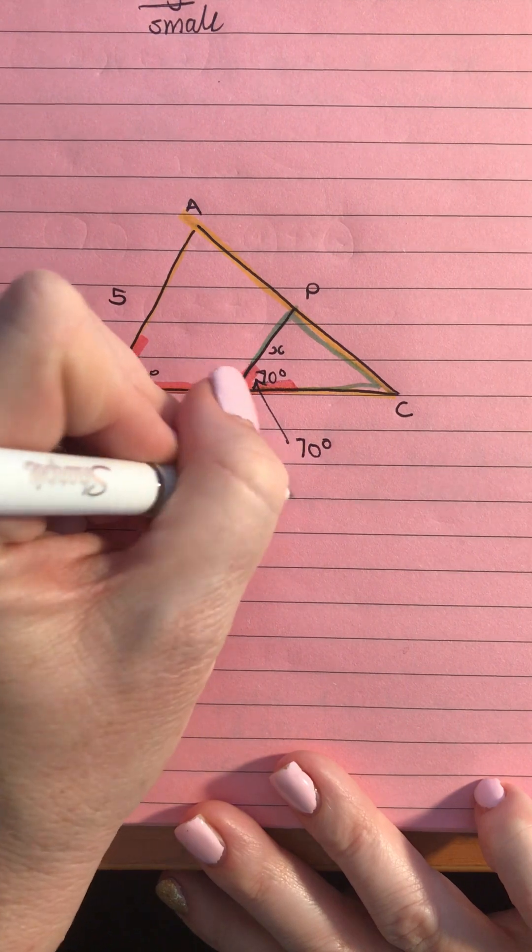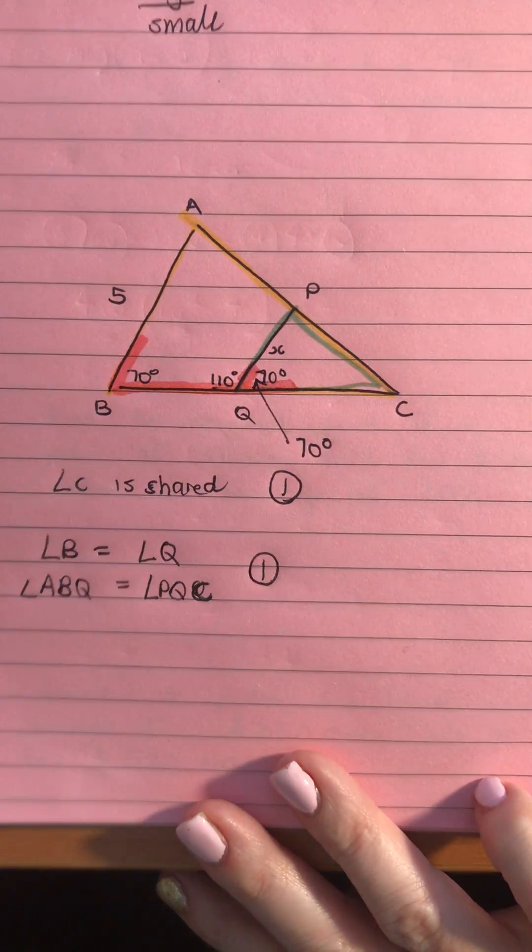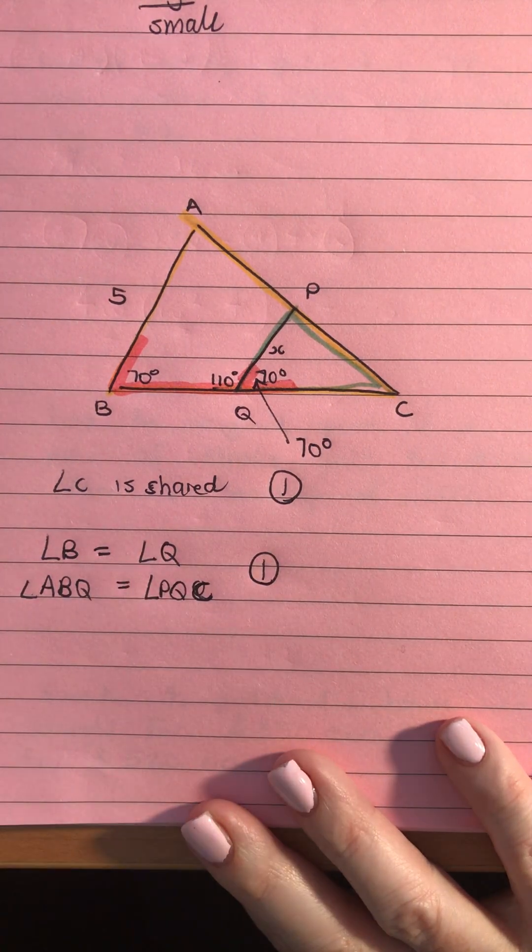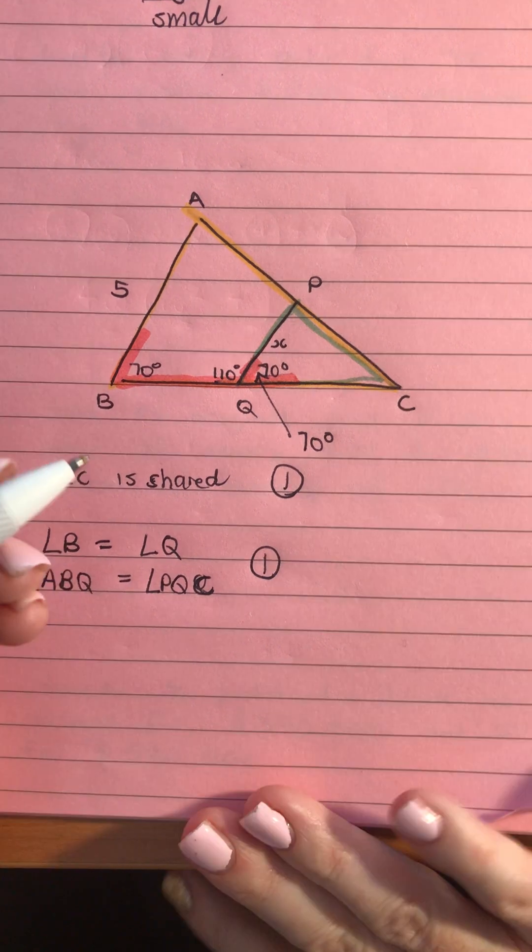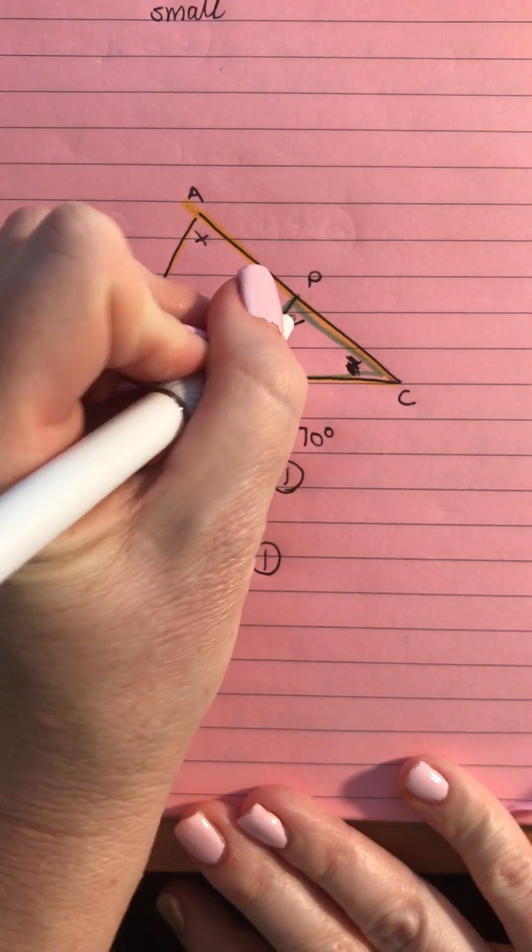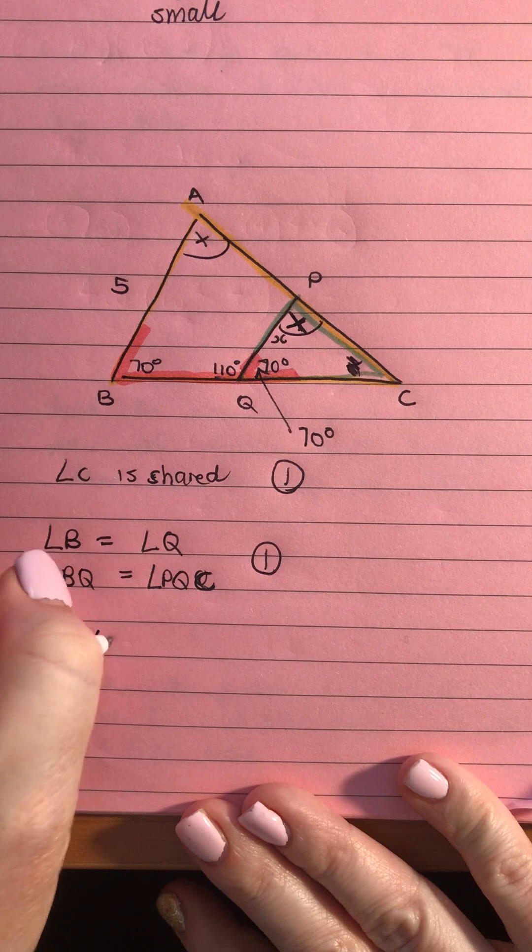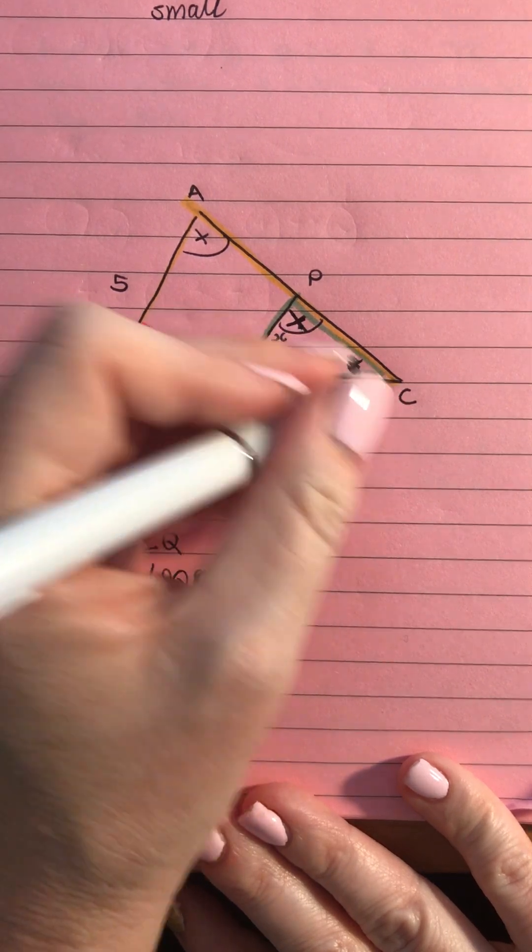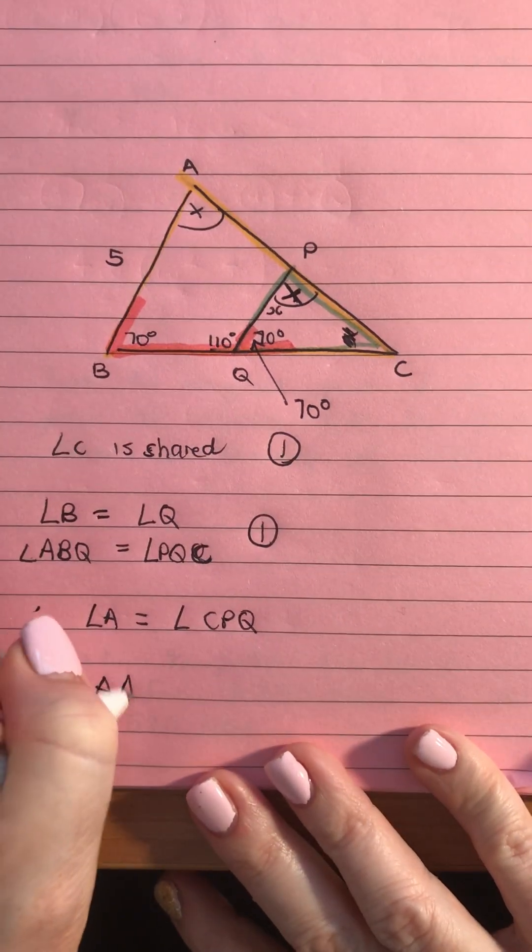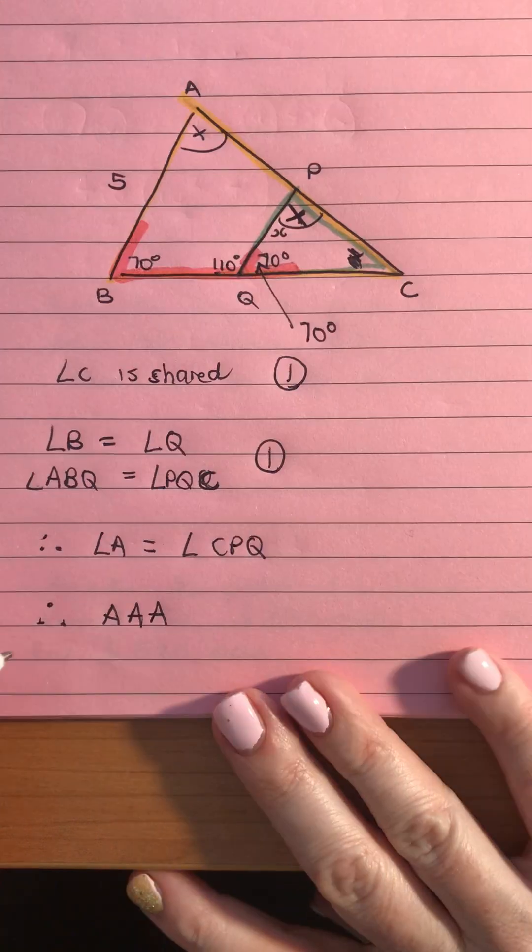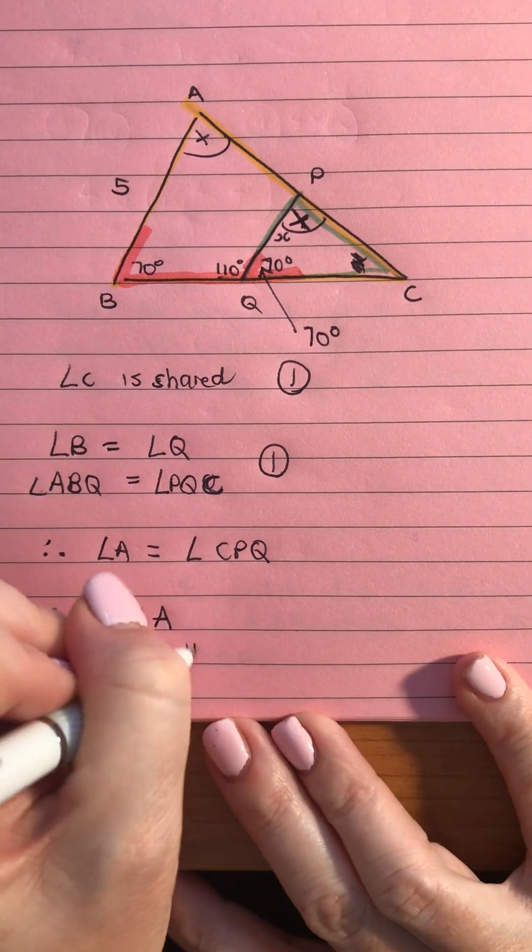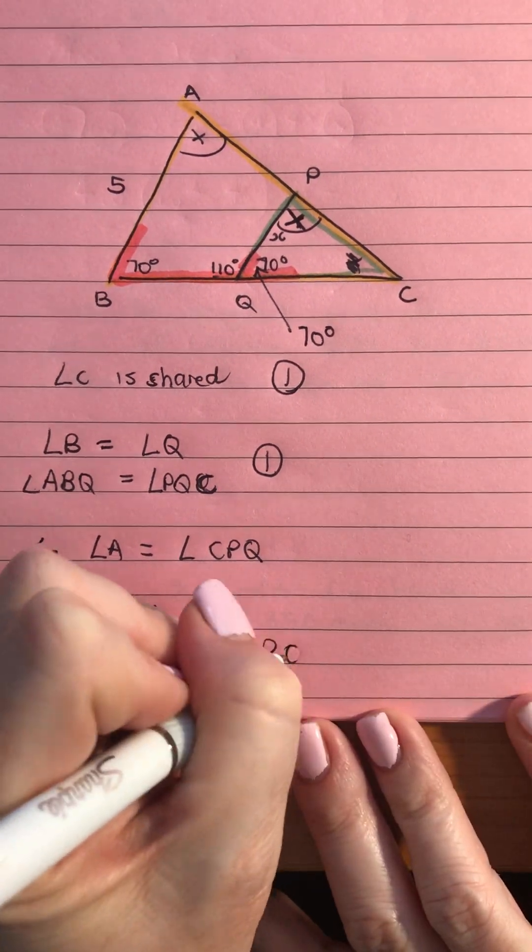So we now have this is our first statement that C is shared, we then have another angle that we know and we don't even need to use this F rule now because once we've got two angles that we know we then know that the third one has to be the same as well. So then therefore angle A must equal angle CPQ so we have therefore angle angle angle is our coded reason, therefore triangle ABC is similar to triangle PQC.